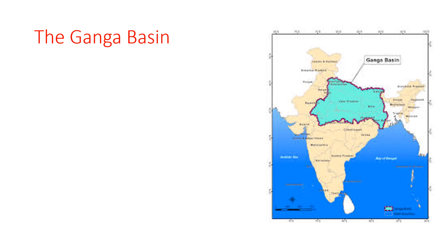The Ganga Basin: the Ganga is considered the most sacred river of our country. It originates as the Bhagirathi from a glacier called Gangotri. The Alaknanda and Mandakini rivers join the Bhagirathi on its way down the hills, and the combined water flows as the Ganga. The river Yamuna originates from a glacier called Yamunotri and joins the Ganga at Allahabad. This place is called Sangam.